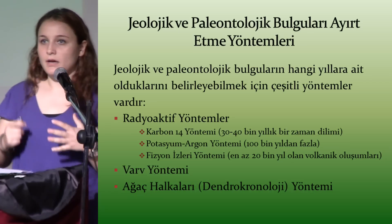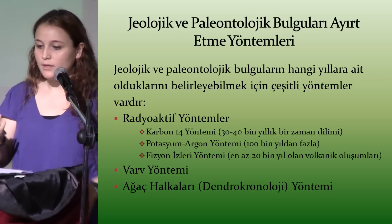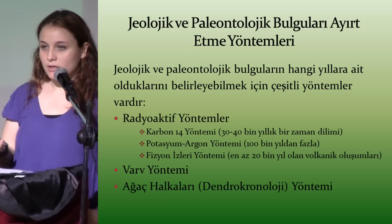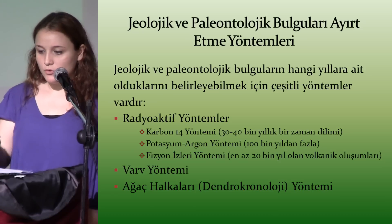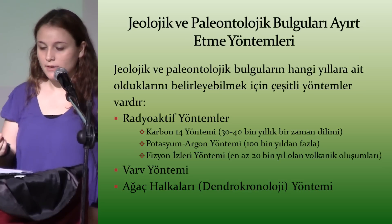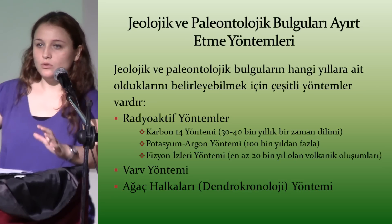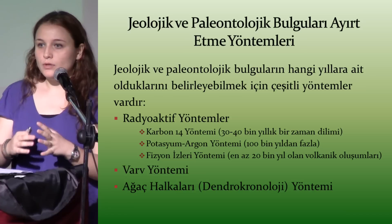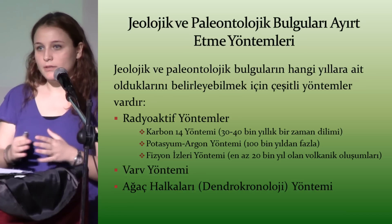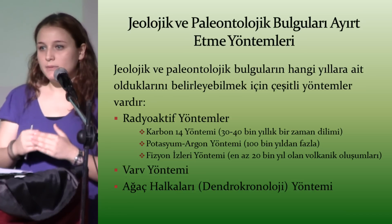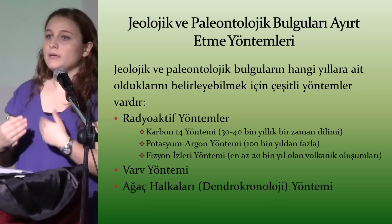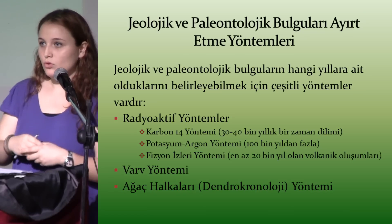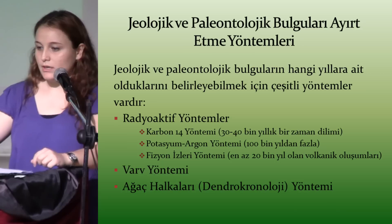Peki fosillerin hangi döneme ait olduklarını nasıl belirliyoruz? Farklı yöntemler var: radyoaktif yöntemler, varv yöntemi, ağaç halkaları yöntemi. Radyoaktif yöntemlerde Karbon-14 yöntemi, potasyum-argon yöntemi, fisyon izleri yöntemi gibi çeşitli yöntemler var. Karbon-14'ü anlatacak olursam: insan vücudunda Karbon-12 ve Karbon-14 izotopları eşit oranda bulunuyor. Canlı öldükten sonra Karbon-12 sabit kalırken Karbon-14 izotopu azalmaya başlıyor; bu azalma oranına bakarak canlının hangi döneme ait olduğu anlaşılabiliyor. Bu yöntem 30-40 bin yıllık bir zaman dilimini ortaya çıkarabiliyor.